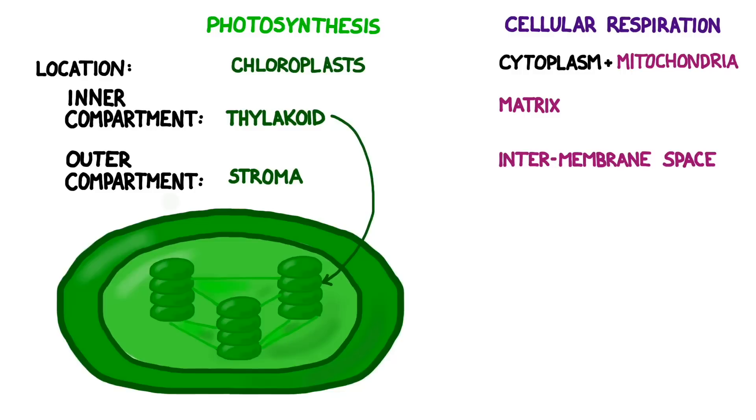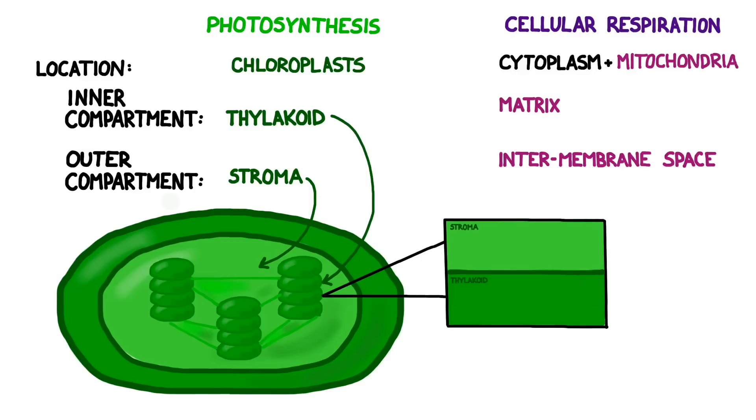Here's what a chloroplast looks like. The thylakoids are pigment-filled discs stacked up on top of each other. Under a microscope they do look a little bit like pancakes. The stroma is a fluid-filled space surrounding the thylakoids. The membrane that separates these two structures is a crucial part of photosynthesis. This membrane is studded with several key proteins including light absorbing complexes called photosystems and a protein called ATP synthase.